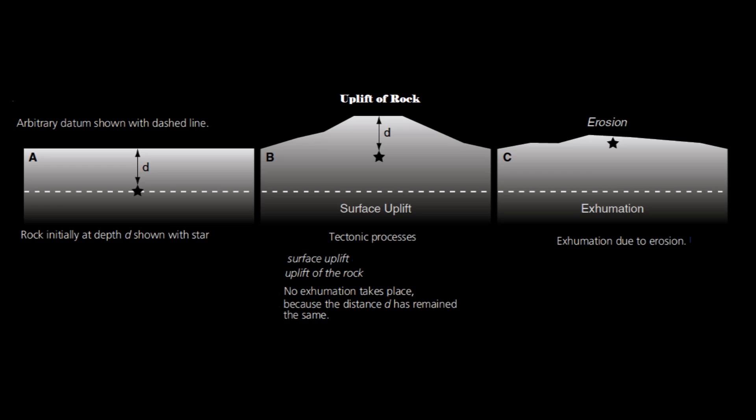The words exhumation and burial are used to denote the vertical movement of rock relative to the earth's surface. Exhumation is the removal of overburden by erosion or tectonic processes that reduce the distance between the surface and the rock at depth. You can see this clearly in the diagram. Surface uplift and subduction refer to vertical motion of the earth's surface with respect to some reference level.